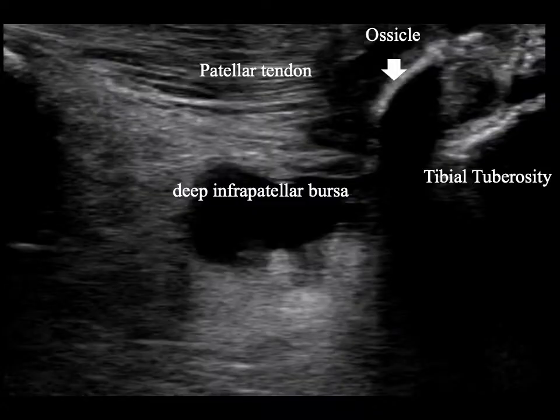This is the ultrasound image, and we confirm the location of the ossicle using ultrasound B-mode imaging. The white arrow indicates the ossicle.